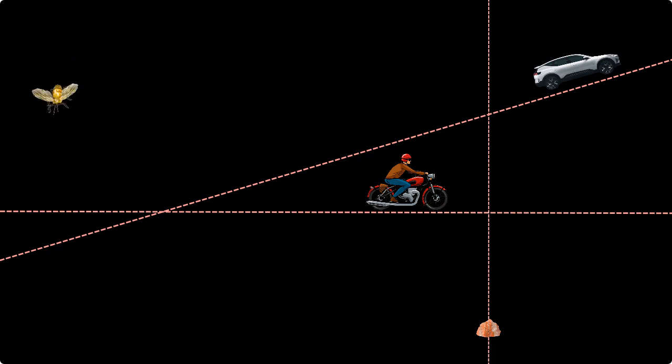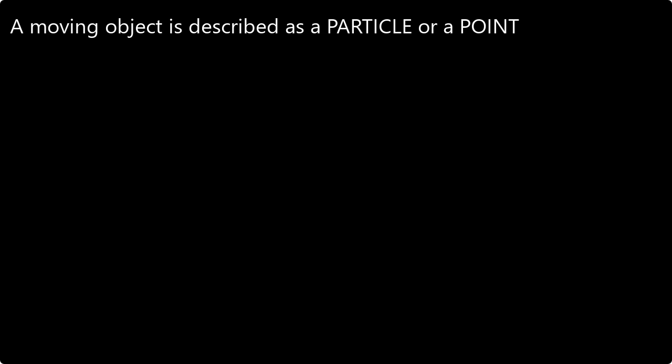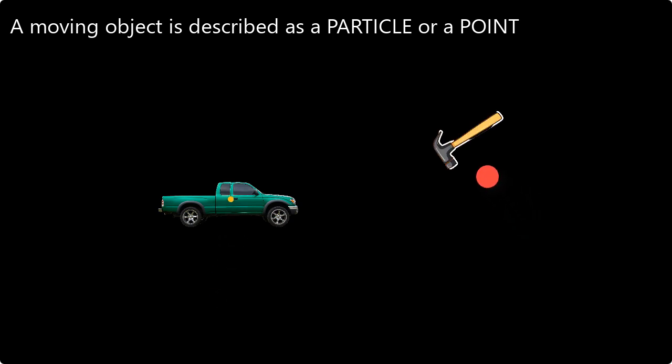Another thing to note is that a moving object is described as a particle or a point object. So if you have a car, we'll consider it as a point, or say a falling hammer as a point. This is done so that when we study the motion of the object, it simplifies the analysis and calculation of their motion.